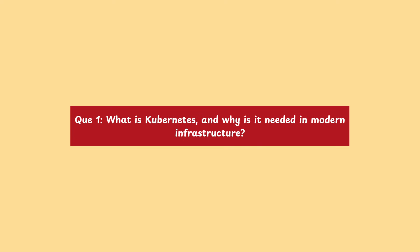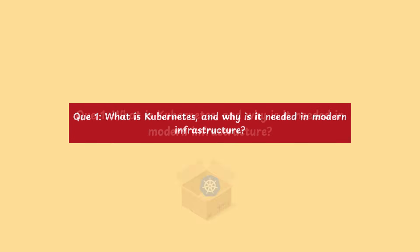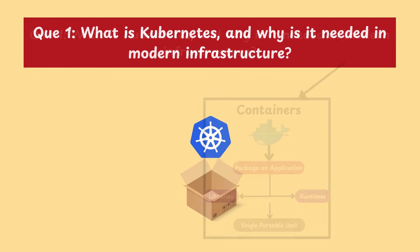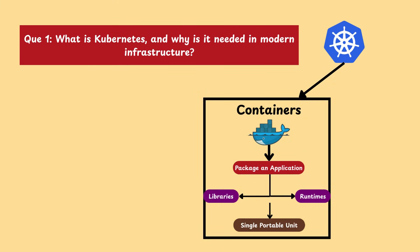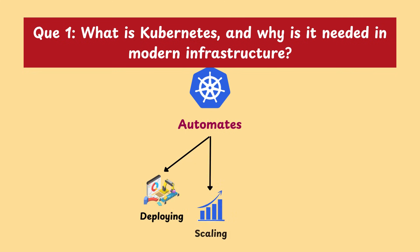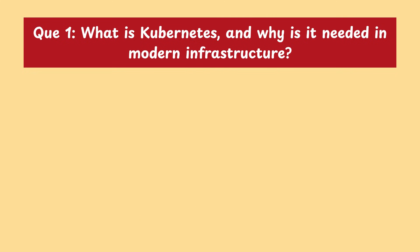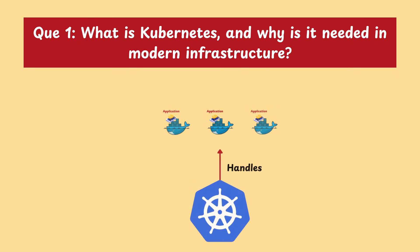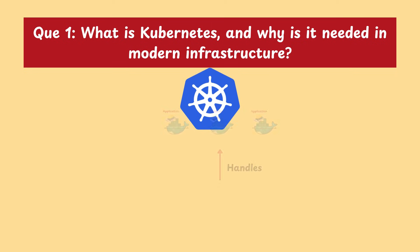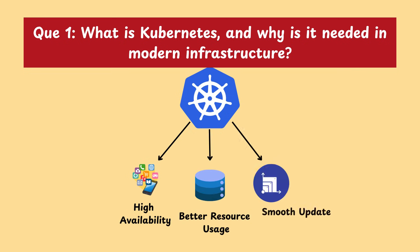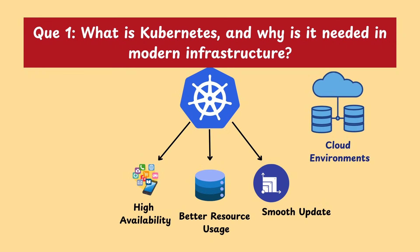Starting with our first question: what is Kubernetes and why is it needed in modern infrastructure? Kubernetes is an open source tool used to manage containerized applications. It automates tasks like deploying, scaling, and restarting containers. In modern infrastructure, where applications run in containers like Docker, Kubernetes is needed to handle large numbers of containers efficiently. It ensures high availability, better resource usage, and smooth updates, making it ideal for cloud environments.